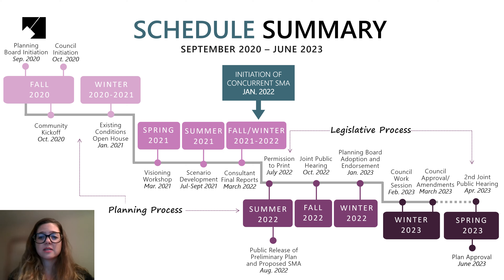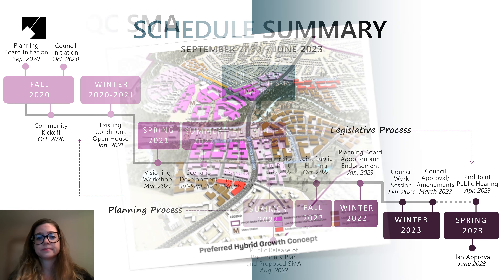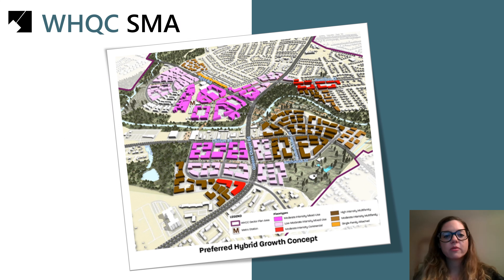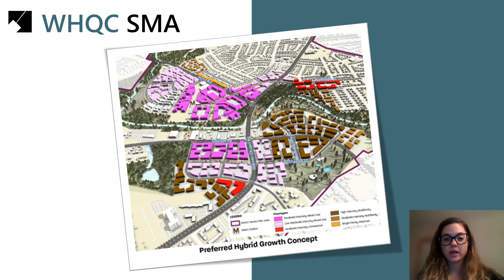A separate or standalone SMA would have taken more than a year after plan approval, and many stakeholders want near-term action. One of the major steps towards implementation of a plan is through implementing its zoning recommendations, and a concurrent SMA will allow us to do this simultaneously with plan approval and move the needle forward sooner. The SMA is simply the process that allows us to implement the zoning changes necessary to bring the sector plan recommendations to fruition.